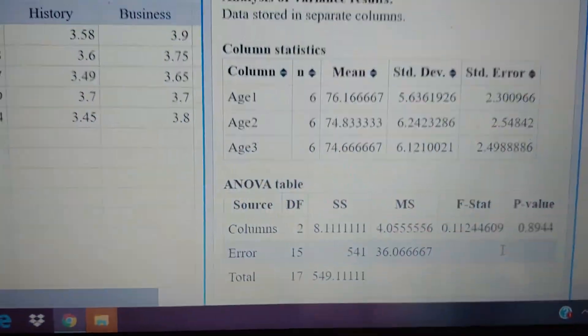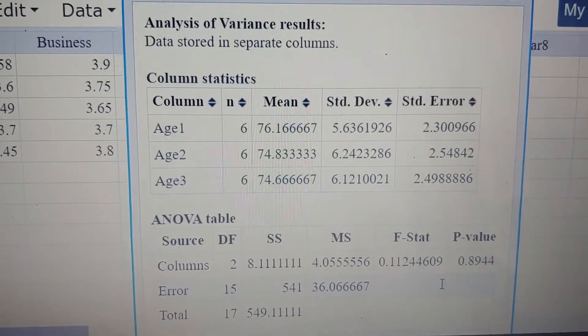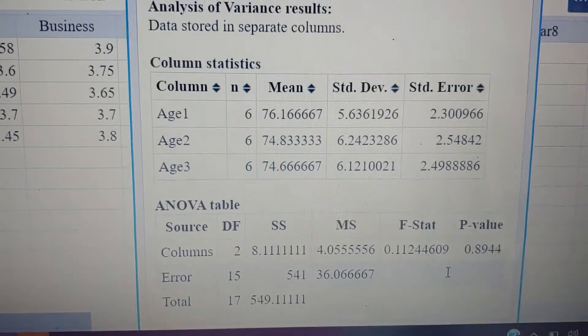So I have my age data, and I went through the steps of STAT, ANOVA, one way, and highlighted the three age groups.